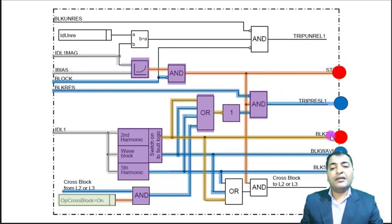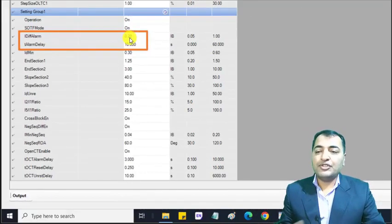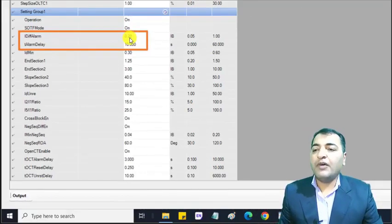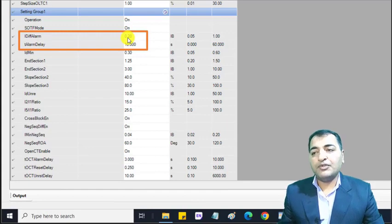The harmonic, the block harmonic by the second element is enabled or one, and also for cross blocking as you can see the cross blocking is also one. And we have to check why we have such an alarm. We have to check before tripping the transformer.